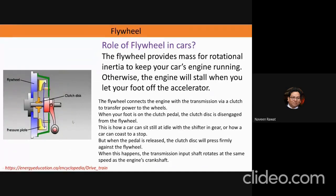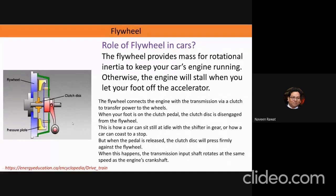The way the power is transferred from the crankshaft to the vehicle is through a flywheel in a manual transmission. The engine is producing power through a two-stroke or four-stroke cycle, so it is basically not a continuous production of power. To make it much more continuous so that the car doesn't feel a jerky motion, you have something called a flywheel present in your car.